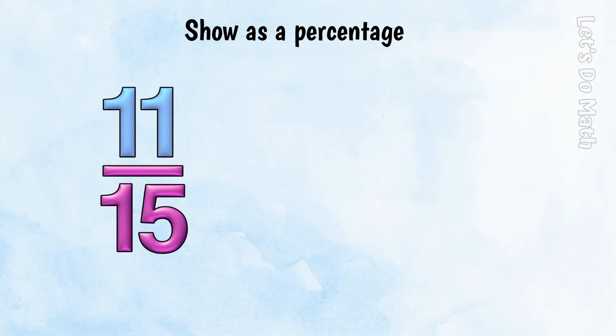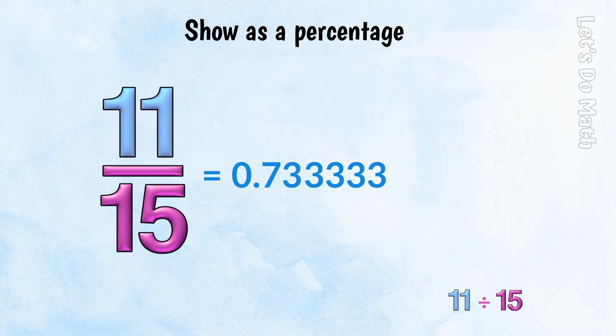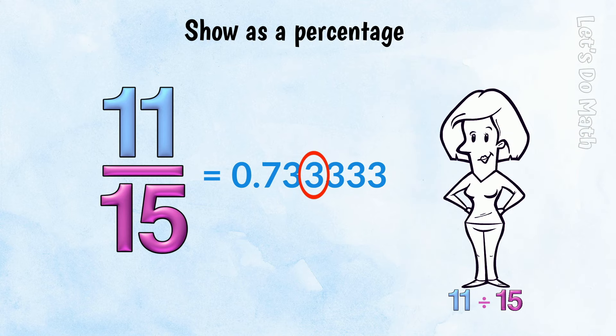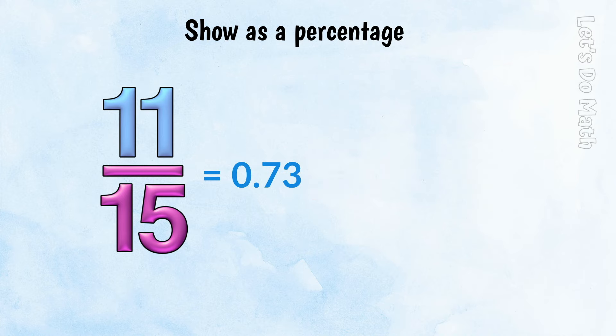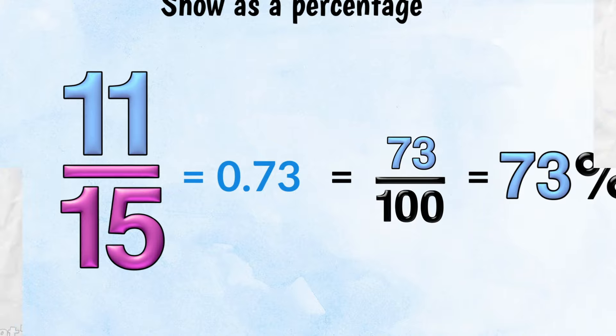11 fifteenths. 11 divided by 15. 0.73 recurring. The third figure is a 3, so we keep our 0.73, no rounding up. That's 73 hundredths, and that is the same as 73%. Last one!